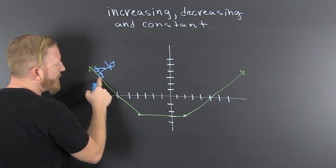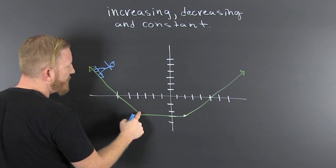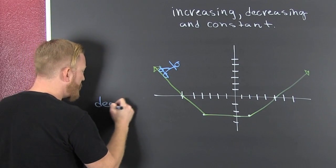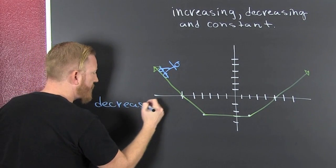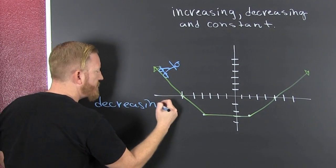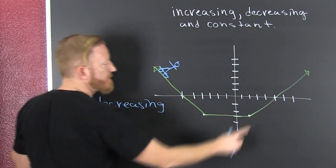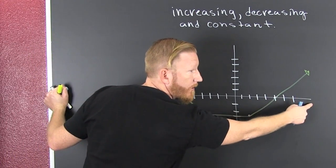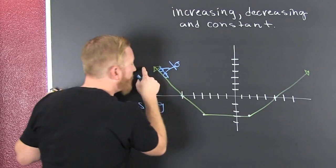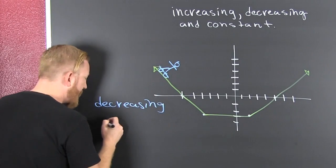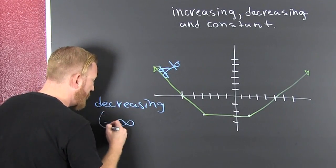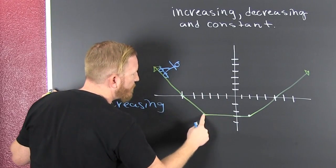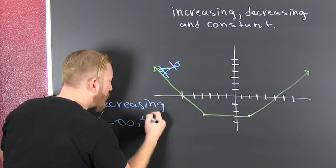We are going down from here to here, so we can say we're decreasing. Decreasing on which values of X? These values are going down, so that's minus infinity all the way to four — minus infinity to four.